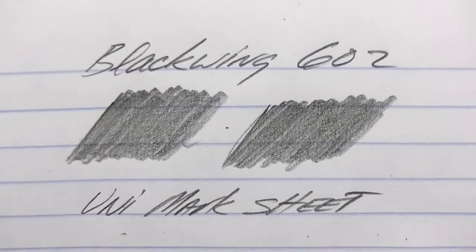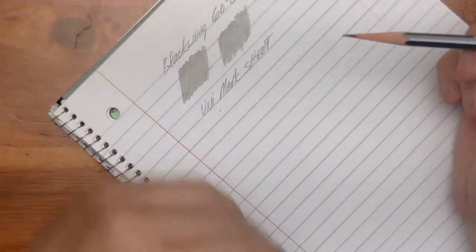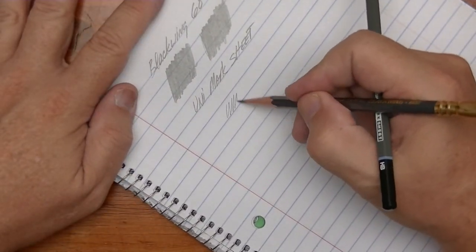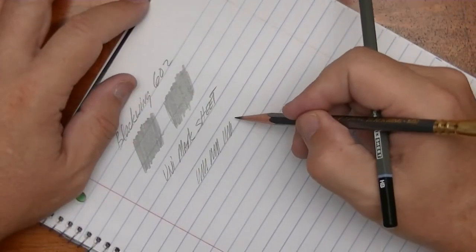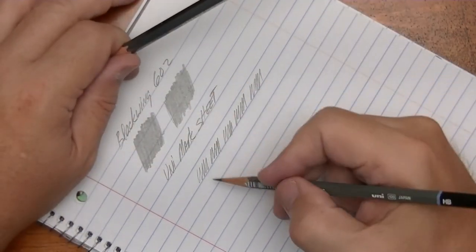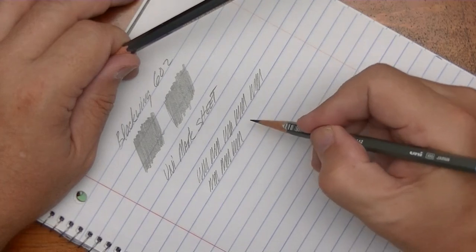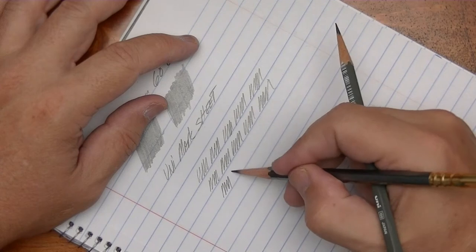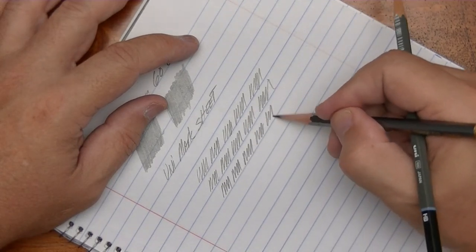And you can see the tonal quality is comparable. The feeling of smoothness, I can't tell the difference. So to the best that I can tell to my sensory perception here, the Marksheet appears to draw or write pretty much the same as a Blackwing 602.